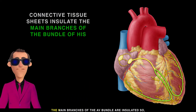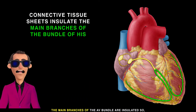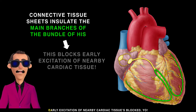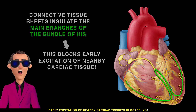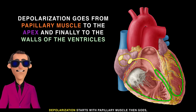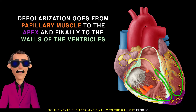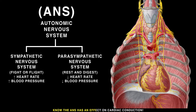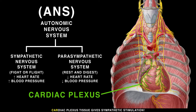The main branches of the AV bundle are insulated, so early excitation of nearby cardiac tissues is blocked. Depolarization starts with the papillary muscles, then travels to the ventricular apex, and finally to the walls.